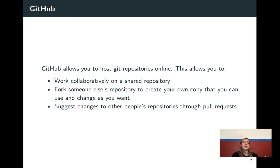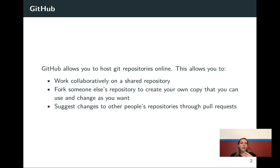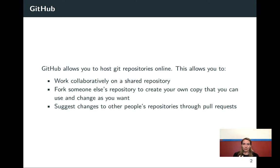You can also take a project that somebody else has done and fork it if you want to expand on it and alter it for your own work. You can also suggest changes to other people's repositories using pull requests. For example, if you're working with an R package and the person is developing that package on GitHub, and there's a typo in the help file, you can fork their repository, make the change, do a commit with a message explaining it, and then do a pull request asking them to pull that change back into their main version.